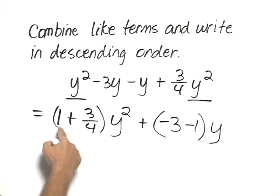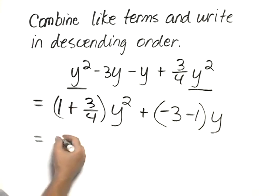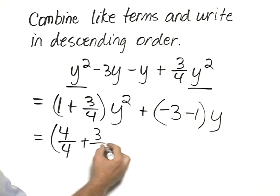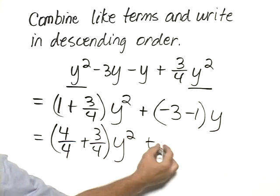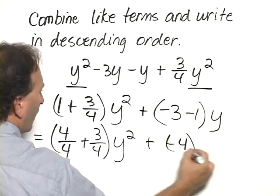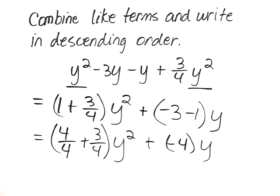Now, to add this together, we would need to rewrite the 1 as 4 over 4 plus the 3 fourths, and that's y squared, plus negative 3 minus 1 is negative 4y.